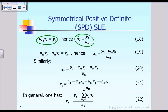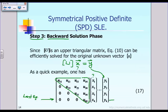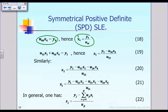After solving for x4, we look at the next-to-last equation — the third equation. From the third equation: 0 times x1 plus 0 times x2 plus u33 times x3 plus u34 times x4 equals y3. That is exactly what we have in equation 19. Because we already know x4 from equation 18, we can now solve for x3.